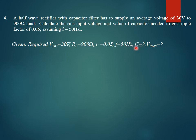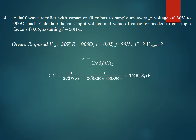Using the ripple factor formula r = 1 / (2√3 · f · C · RL), with r, f, and RL known, C is the only unknown. Reformulating gives C = 1 / (2√3 · f · r · RL). Substituting the values gives a capacitance of 128.3 μF.